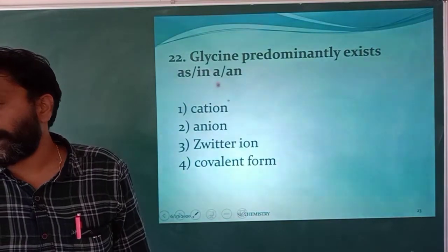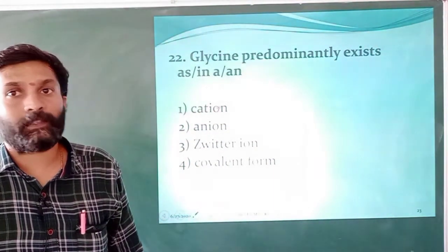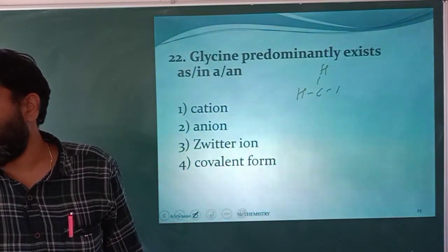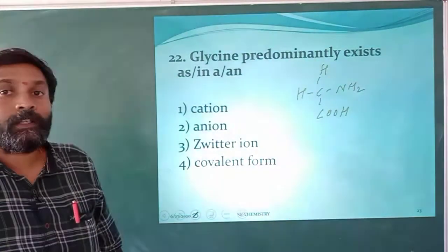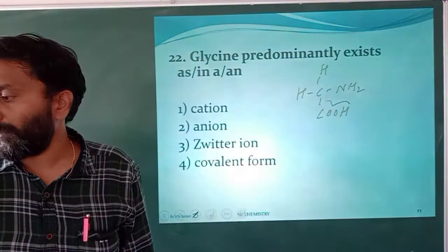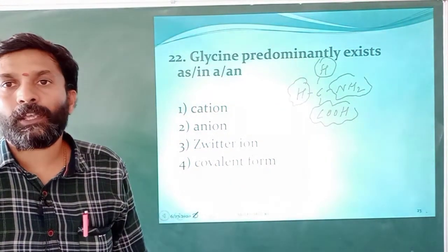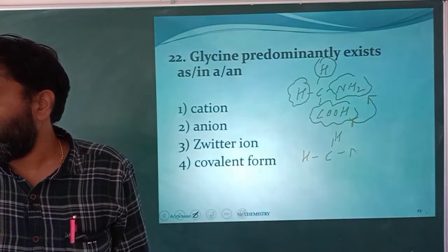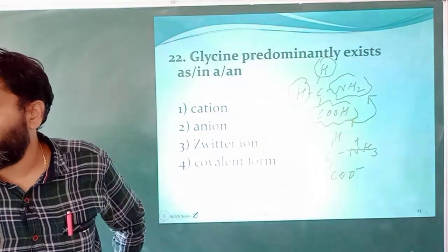Glycine predominantly exists as a zwitterion. They have not mentioned alkaline or basic medium. Glycine is a simple amino acid which is optically inactive, because it does not have four different groups on its carbon — it is achiral. Due to the presence of both an acidic group and a basic group, glycine exists as a zwitterion, which is considered a dipolar ion.